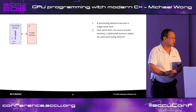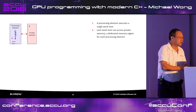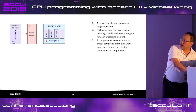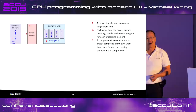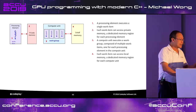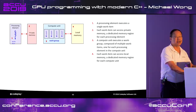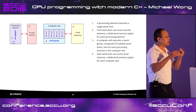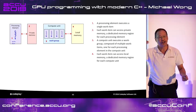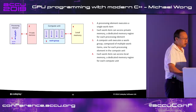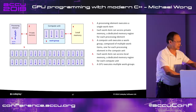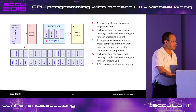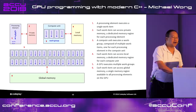In GPU terminology, a processing element is like a very small CPU core, running a very lightweight thread with barely any stack and no dedicated registers. In the C++ standard, we've changed the terminology from std::thread to 'execution agents' to accommodate these different kinds of threads. A compute unit is called a work group, typically containing 4, 8, or 16 processing elements with access to local memory — used for sharing partial results, like in a reduction algorithm. When you launch a kernel, you launch a large number of these compute units, all with access to global memory.